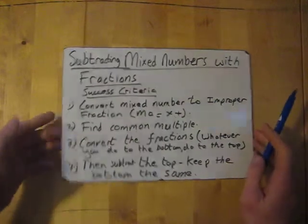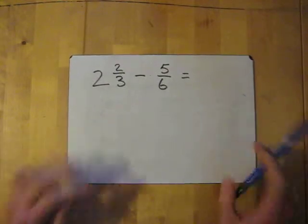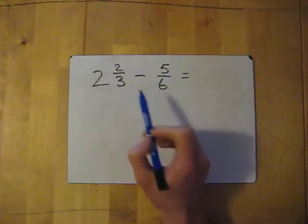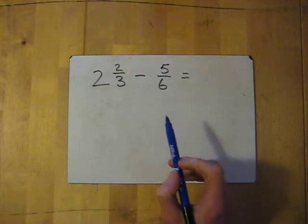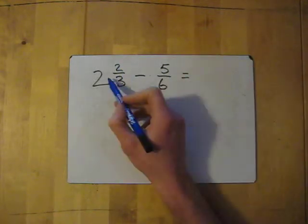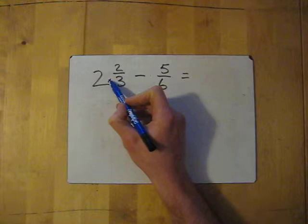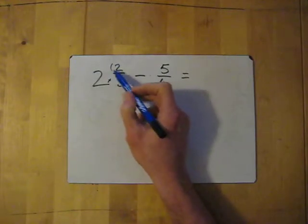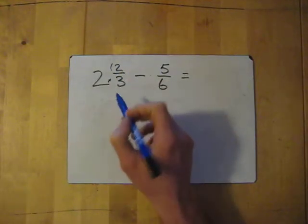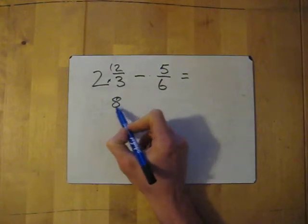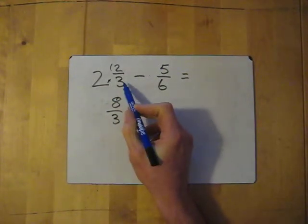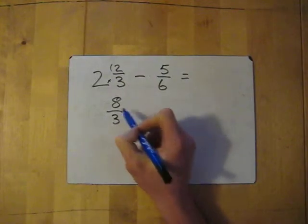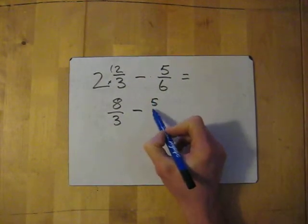Let's have a go. We've got two and two thirds take away five sixths. First thing we'll do is convert this mixed number into our improper fraction. Remember we ask our math for help - multiply and add. We multiply the whole number with the denominator. Two times three gives me six. Then we add what's left over from the top of the fraction, the two, which gives me eight. I've got eight over three. Now I've turned the mixed number into my improper fraction, take away five sixths.